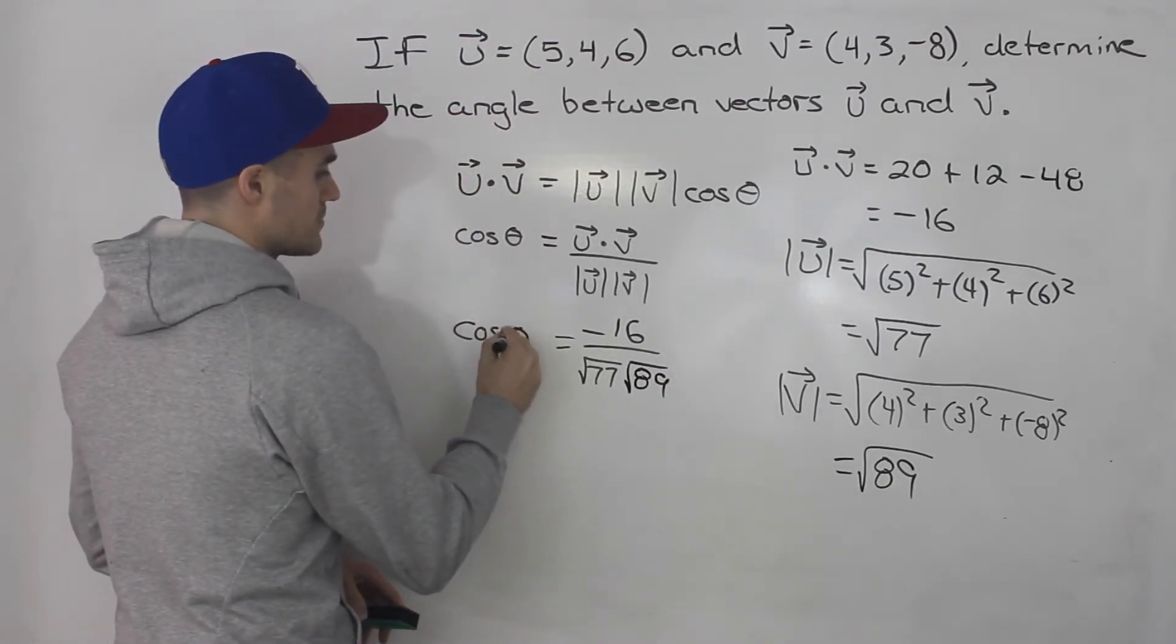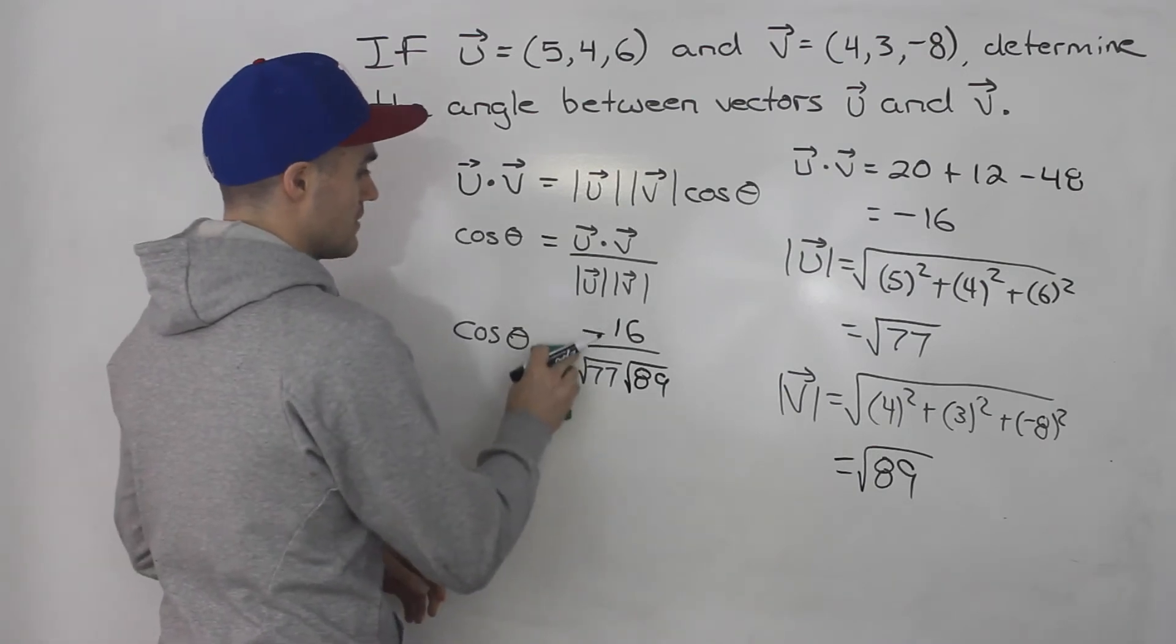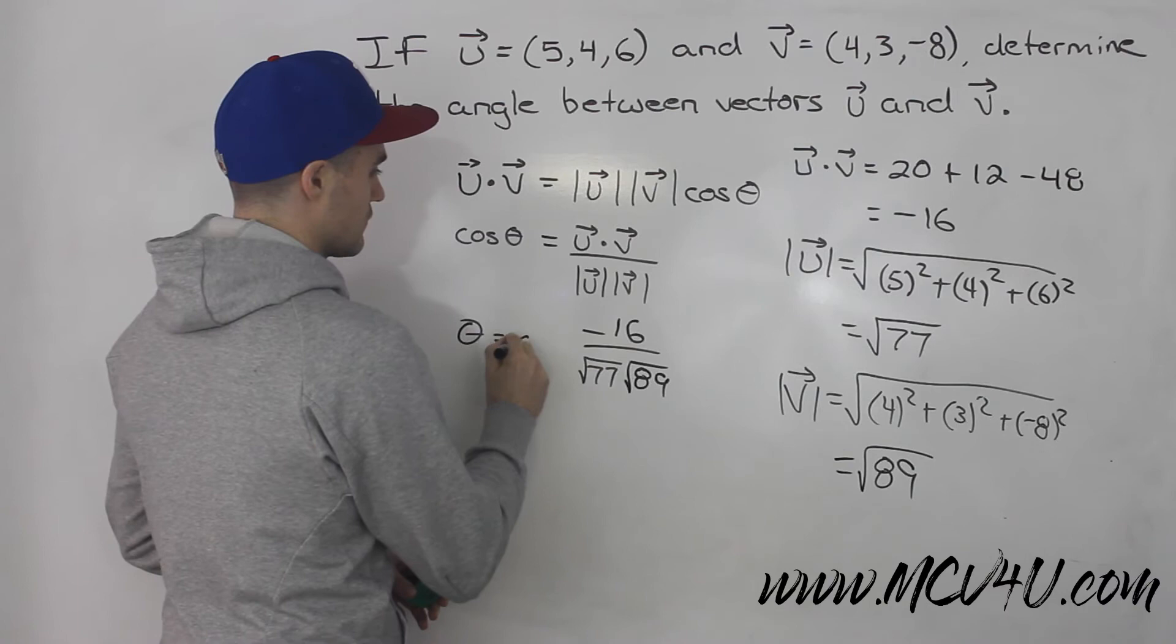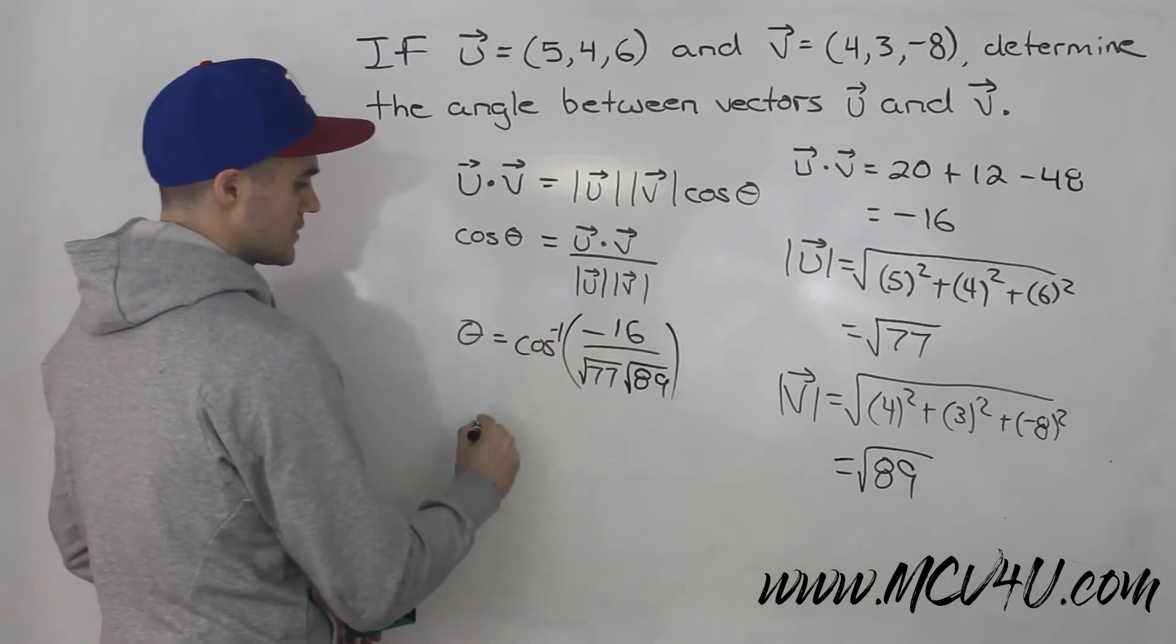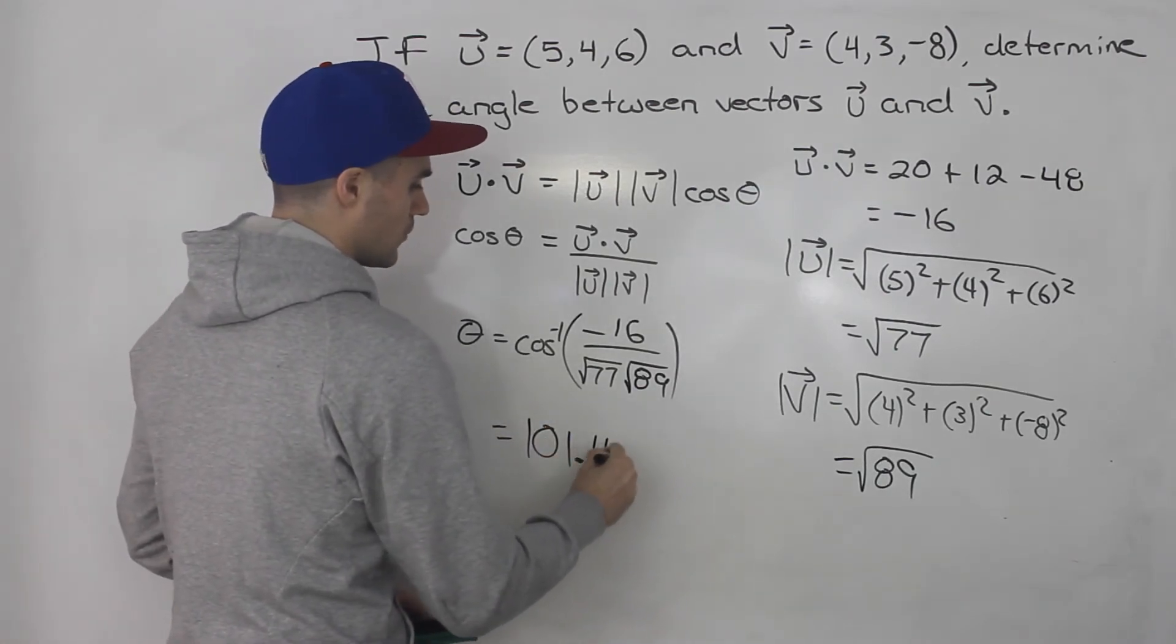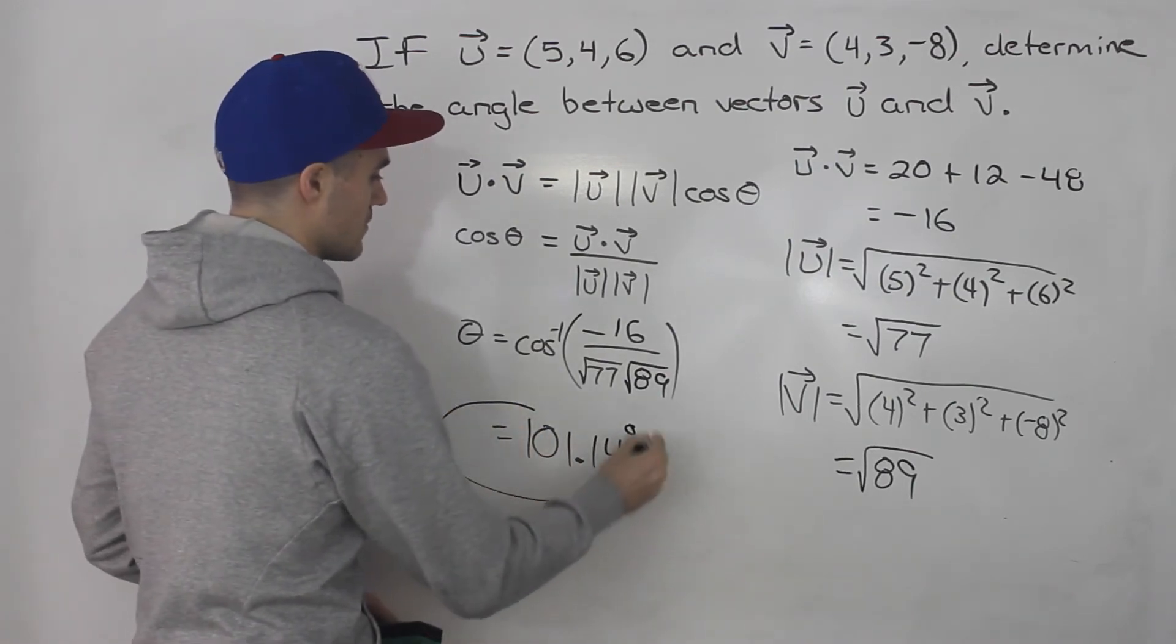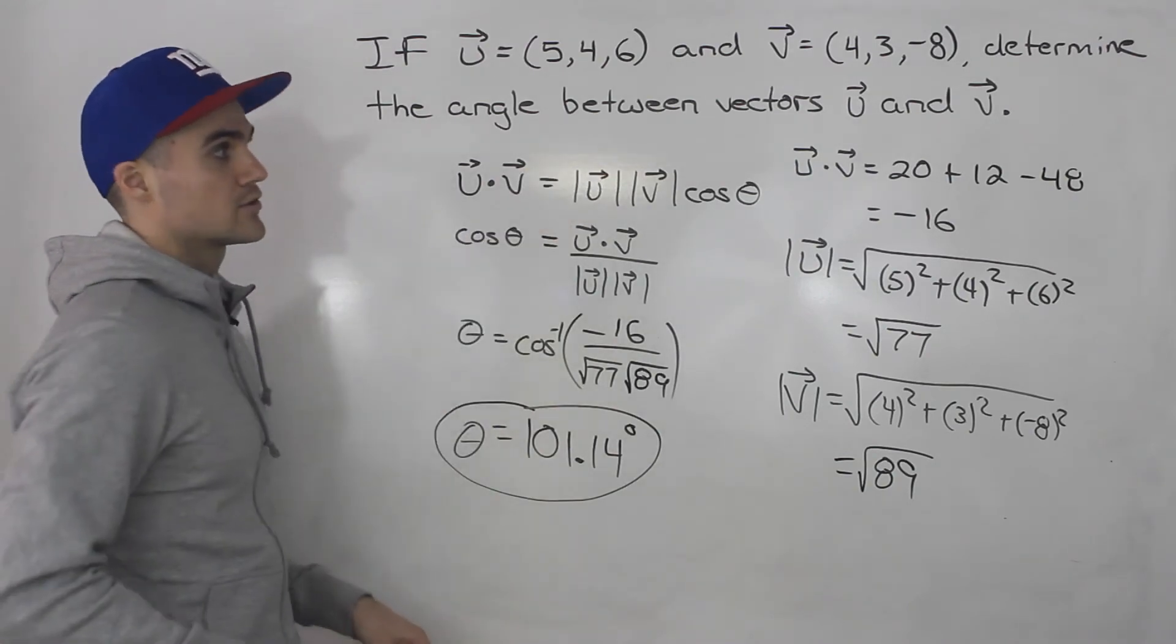So cos theta is basically equal to this ratio. And if we want to solve for theta, what we would do is take the inverse cos of that ratio. And when you do this in your calculator, you end up getting something like 101.14 degrees. So that represents the angle between vectors u and v.